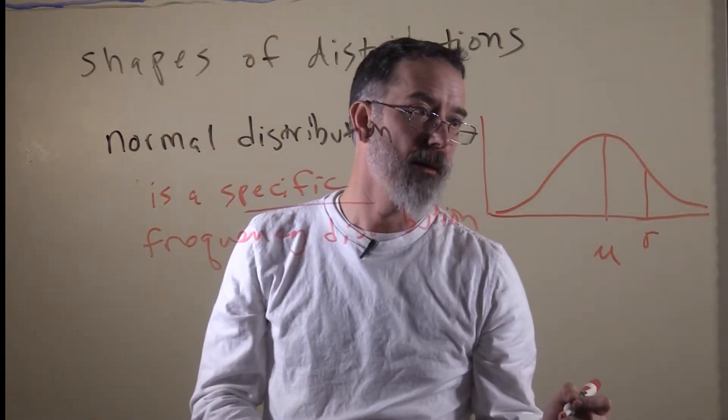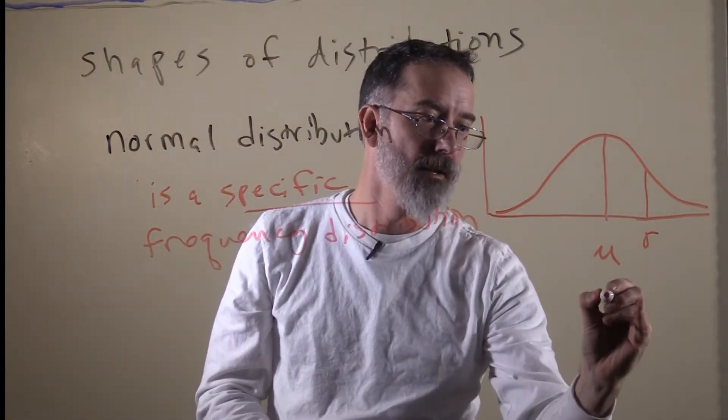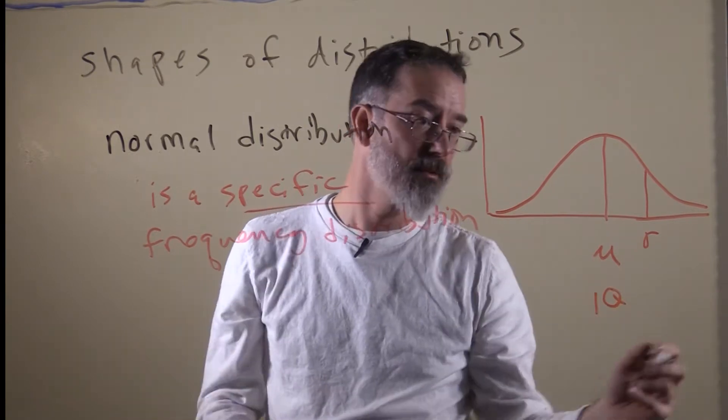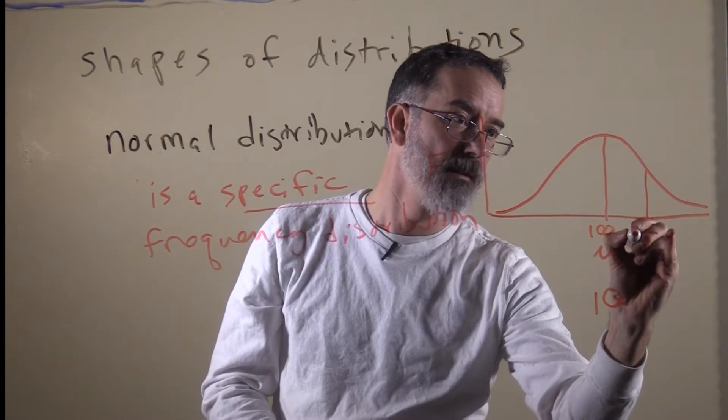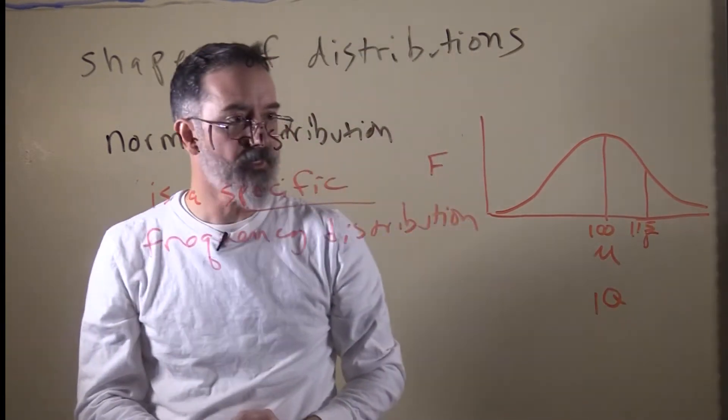For example, something that has the shape is IQ in humans is distributed in a normal distribution. So, you have a mean of 100, standard deviation of 15 for that.